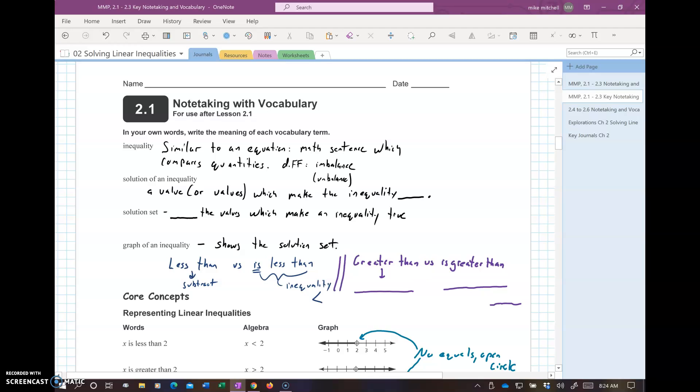Inequality is similar to an equation. It's a math sentence that compares quantities. The difference: equations have balance. Inequalities have an imbalance or an unbalance. They're not equal. They can be equal, but there's also an inequality part.